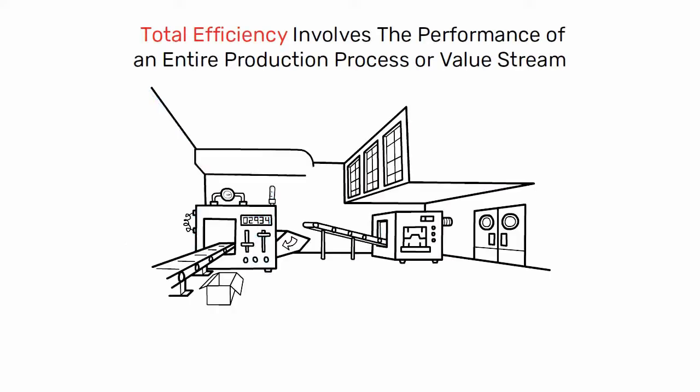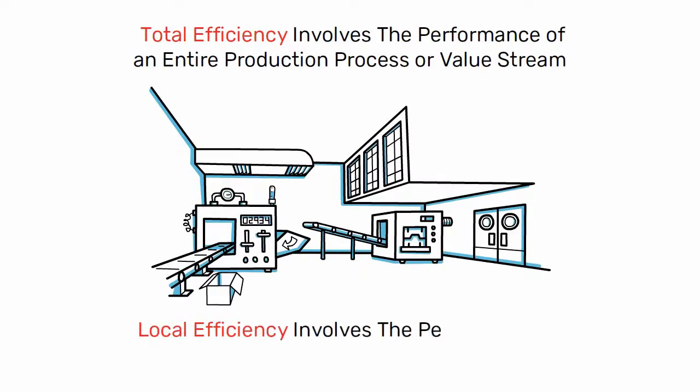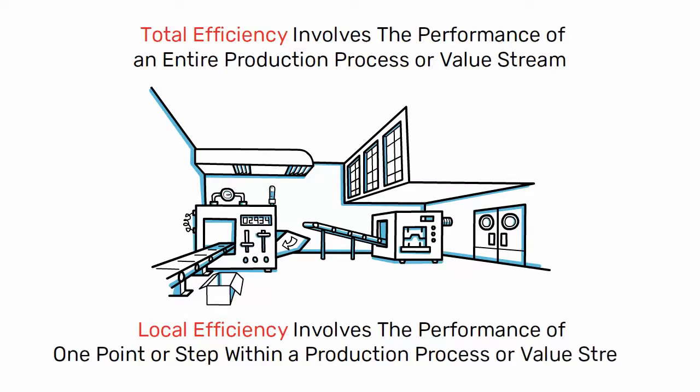Total efficiency involves the performance of an entire production process or value stream, while local efficiency involves the performance of one point or step within a production process or value stream.